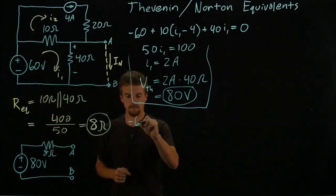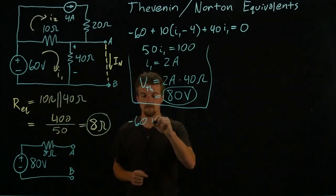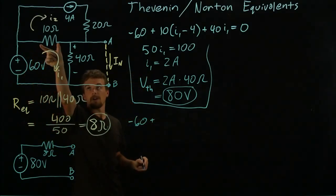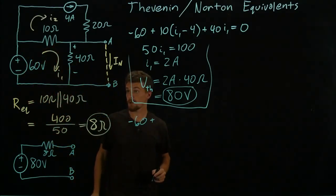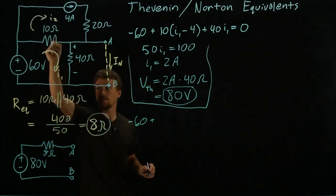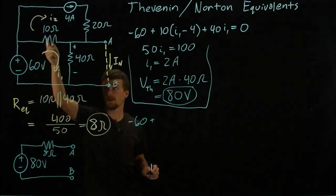We still have that I_2 is equal to 4 amps all the time, so let's start at the same place. We'll have minus 60 plus the voltage drop across this resistor, which is still I_1, which is still 10 ohms times I_1 minus I_2.